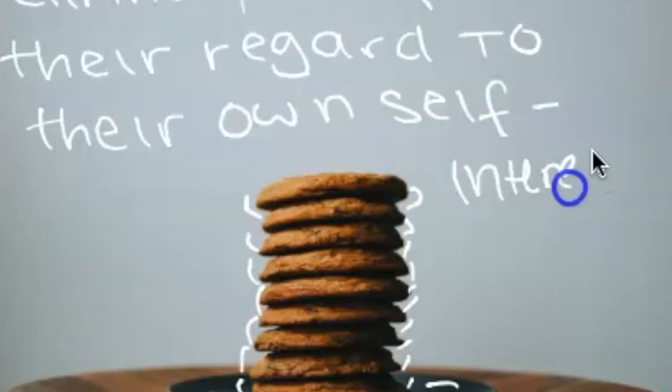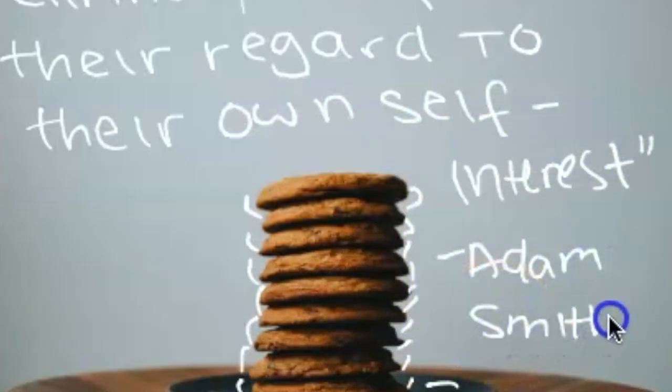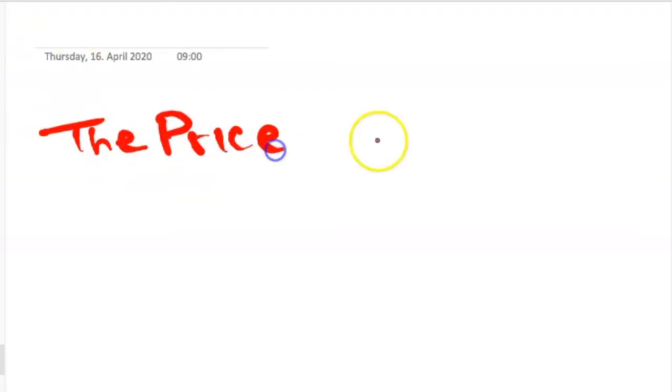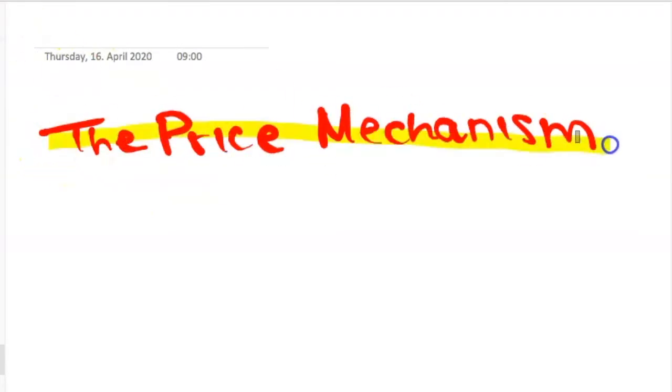What he means by this is that the baker, the brewer or the butcher will not provide us with any goods if there wasn't something in it for them, if they didn't have profit as an incentive and price as a signaling function, which leads us on to look at the price mechanism and the invisible hand.